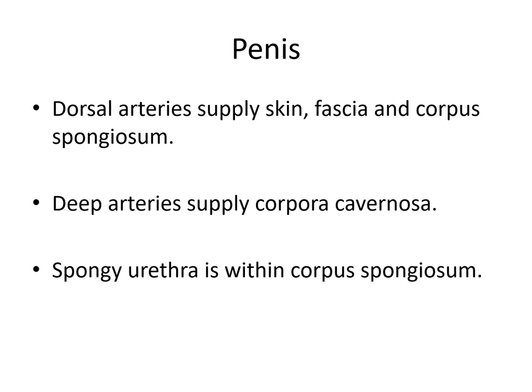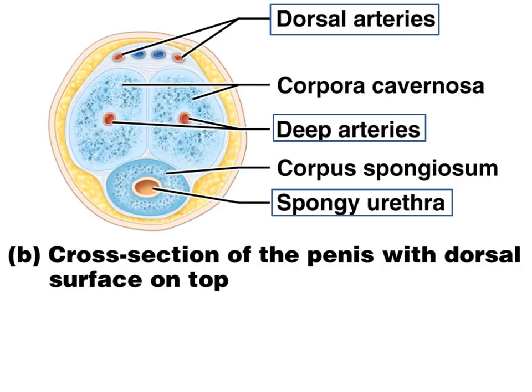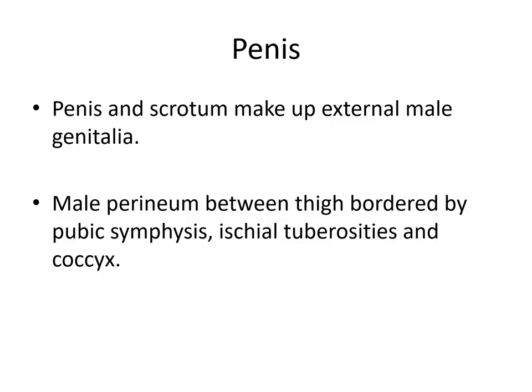The dorsal arteries supply the skin, fascia, and corpus spongiosum, while the deep arteries supply the corpora cavernosa. The spongy urethra is within the corpus spongiosum. Both the penis and scrotum make up the external male genitalia. The male perineum is between the thighs, bordered by the pubic symphysis, ischial tuberosities, and the coccyx.